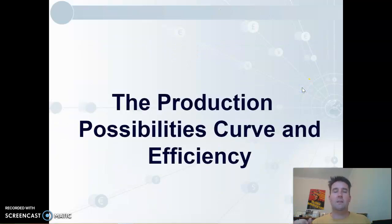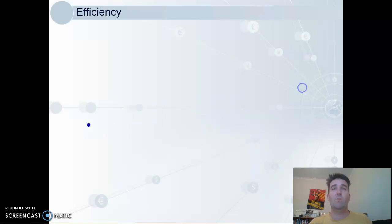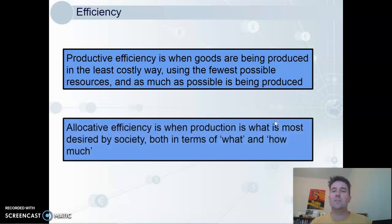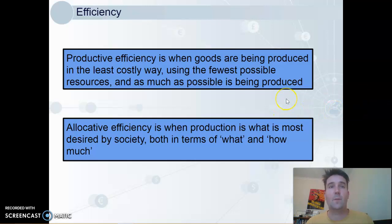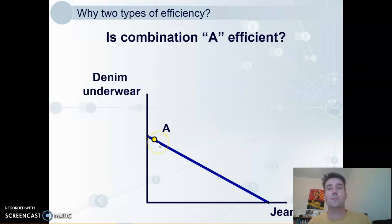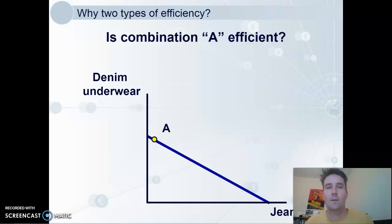We mentioned efficiency briefly earlier, but we're going to get a bit more specific. We've got two types. Productive efficiency is when goods are being produced in the least costly way, using the fewest possible resources, and also as much as possible being produced. Allocative efficiency is when production is what is most desired by society, both in terms of what and also how much. Consider whether combination A on this production possibilities curve is efficient — it is definitely productively efficient as it occurs on the curve. However, it's highly unlikely that society would prefer more denim underwear than jeans.